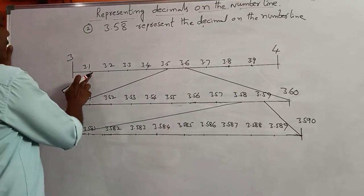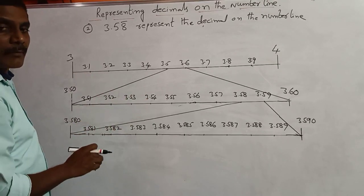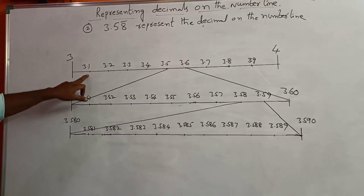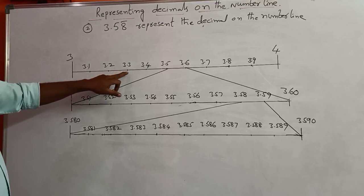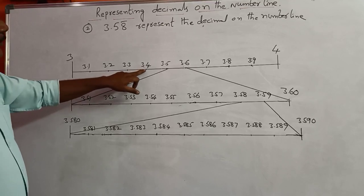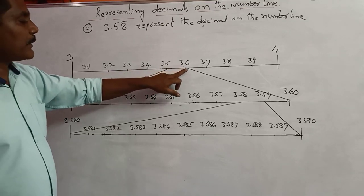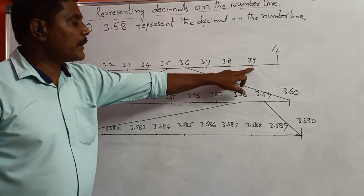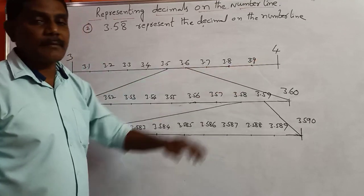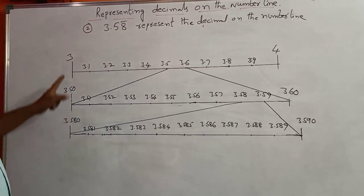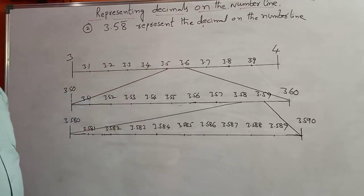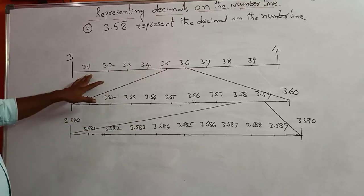On the scale every part equals 1 mm. So the first part equals 3.1, 3.2, 3.3, 3.4, 3.5, 3.6, 3.7, 3.8, 3.9. Then the next number is 4. From 3 to 4 I divided this into 10 equal parts.